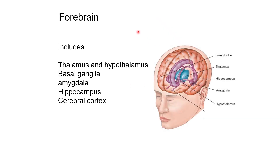Now let's look at the forebrain, which is the more interesting part of the brain because it controls voluntary movement. The forebrain also includes multiple structures. Some of the prominent ones are the thalamus and hypothalamus — with thalamus shown in blue in the middle. It also includes the basal ganglia, amygdala, hippocampus, and the cerebral cortex — the large structure that has grown the most in humans compared to other animals.